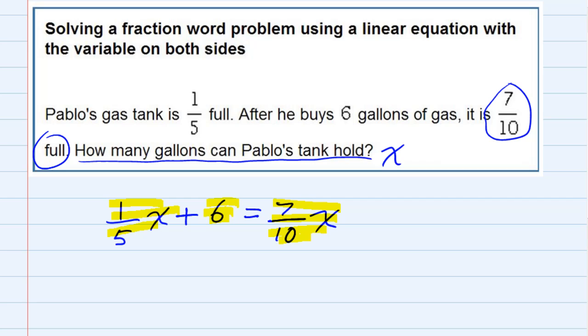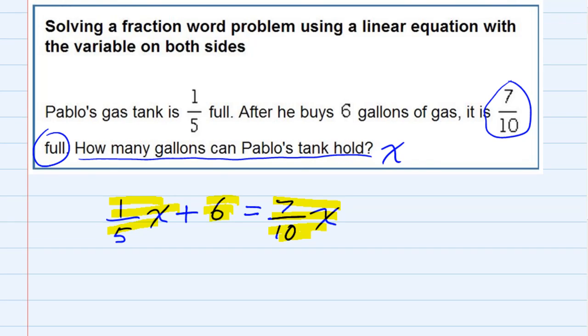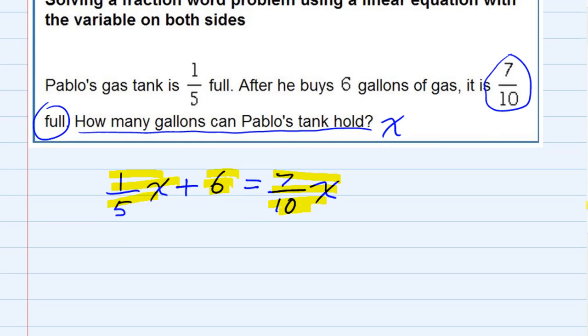We want to solve this for x, that'll tell us how big the gas tank is. But first there's a lot of fractions in there and we may want to get rid of those. Since our two denominators are five and ten, the lowest common denominator is ten.